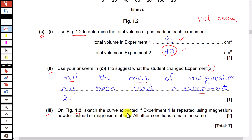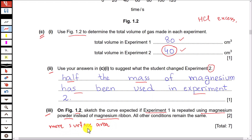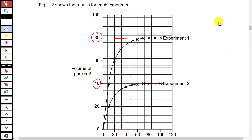On Figure 1.2, sketch the curve expected if experiment 1 is repeated using magnesium powder instead of magnesium ribbon, with all other conditions remaining the same. In experiment 1 we make one change: we use magnesium powder, so its surface area will increase. When there is more surface area, the rate of reaction increases. All other conditions are the same, so the volume of hydrogen gas produced will still remain the same. You draw a new curve with a steeper gradient or slope, but ending at the same level, because only the rate of reaction increases — not the total volume of gas produced.